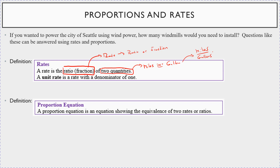A unit rate is a rate where the denominator is one. So when you hear things like 16 miles per gallon, that means you're getting 16 miles per one gallon. Or 35 miles per gallon — you're getting 35 miles per one gallon. That would be a unit rate. We're going to expand on this into what are called proportion equations. A proportion equation is an equation showing the equivalence — meaning equal — of two rates or ratios. We'll look at things like A over B equals C over D, and talk about how you solve equations like this.